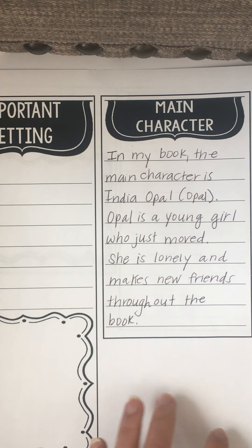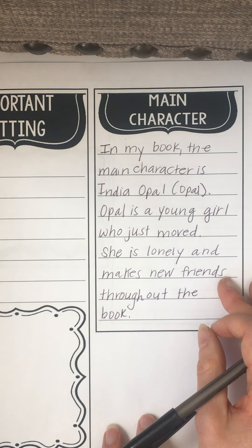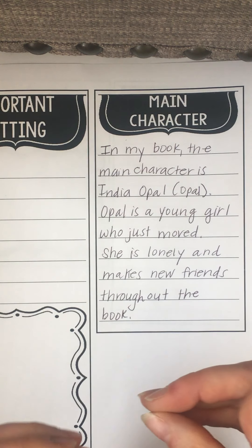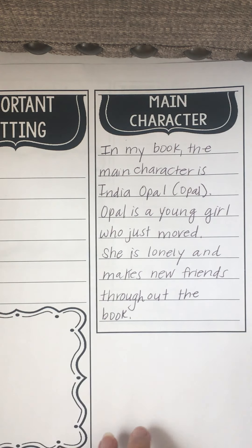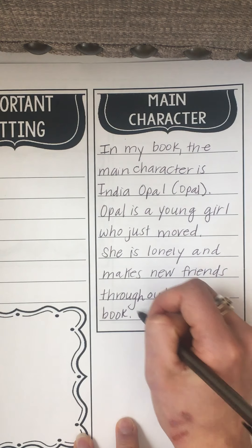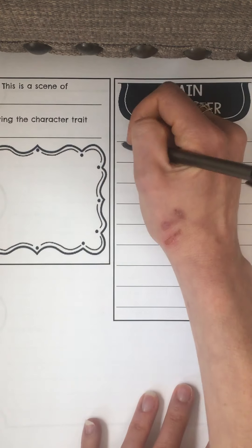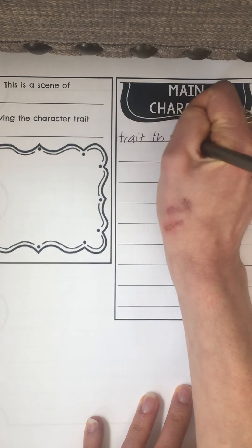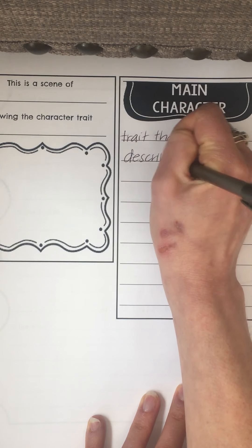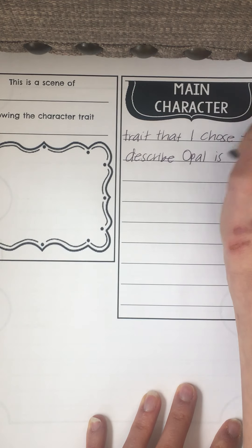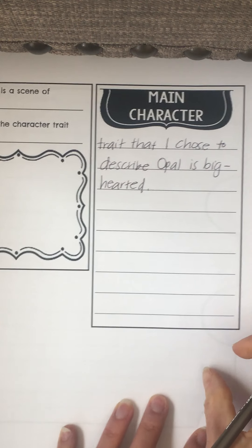Now I'm gonna pick a specific character trait. On my notes from the other day, the character trait I picked for her was 'big-hearted.' I don't want to pick something too specific to a particular moment in the book — I want to pick something that kind of fully encompasses who she is as a person. So the character trait I chose to describe Opal is big-hearted, and I want to give my evidence as to why.